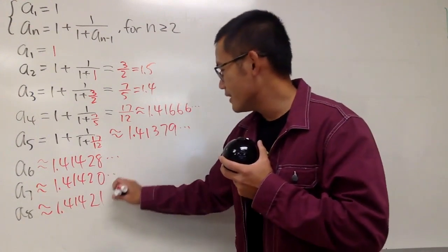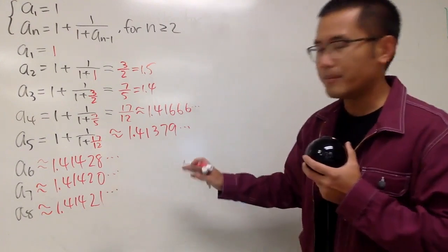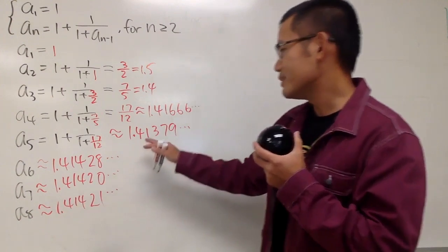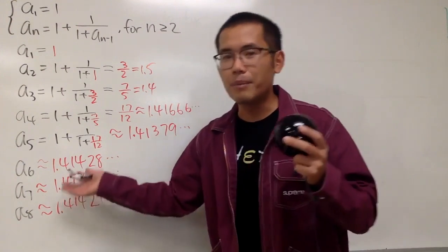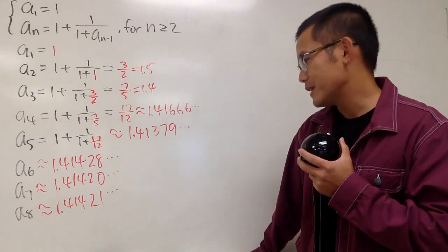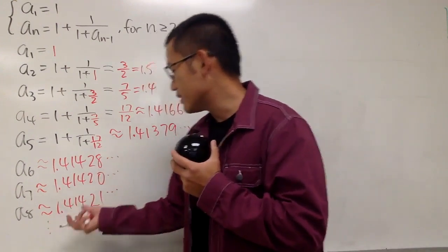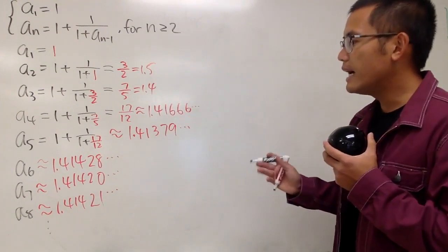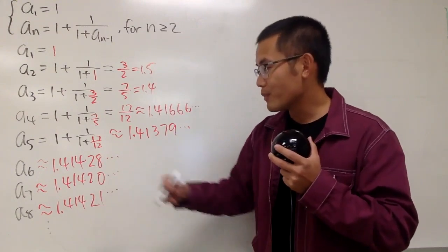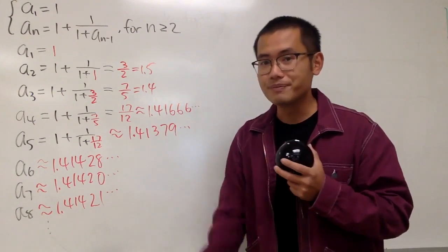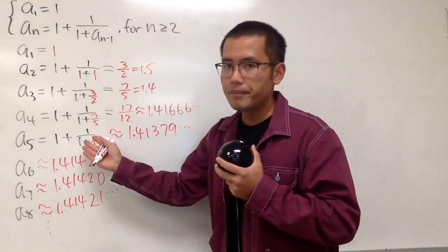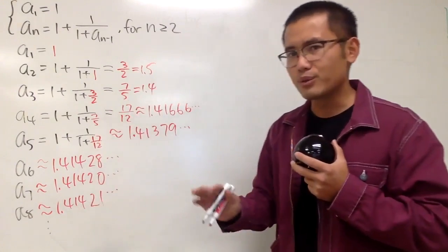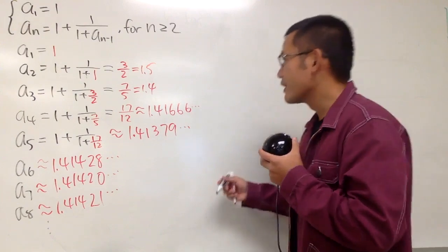we have 1.41420, and here a₈ is 1.41421. As you can see, it looks like this number is actually converging to about 1.414, because you see that I don't think the next one is going to be that big of a difference, isn't it? So, very nice, and here is the deal. This is the list of the first eight terms, and we're going to find out what this is going to converge to.